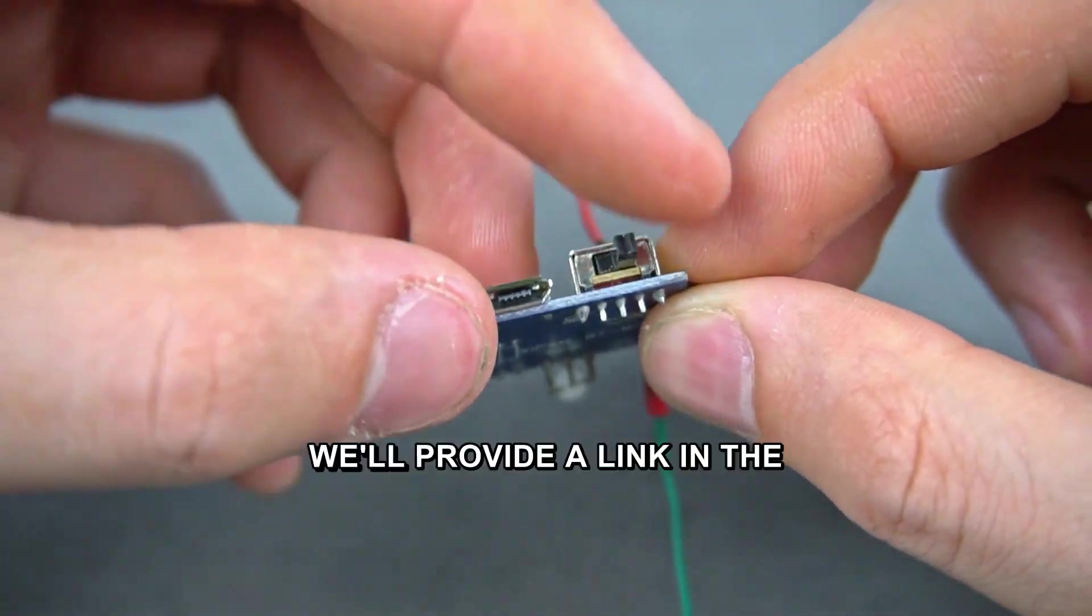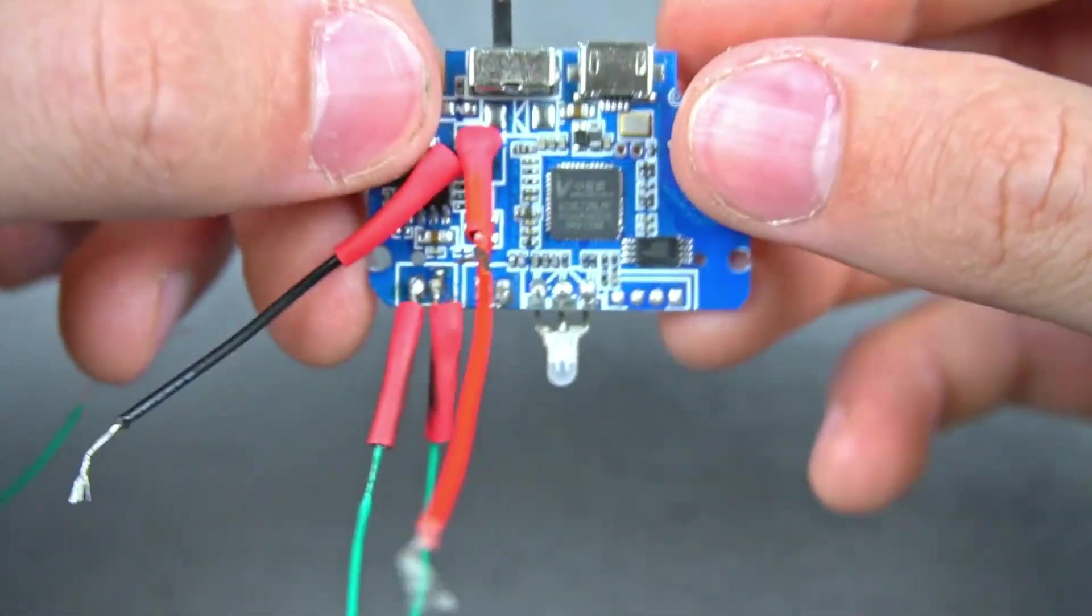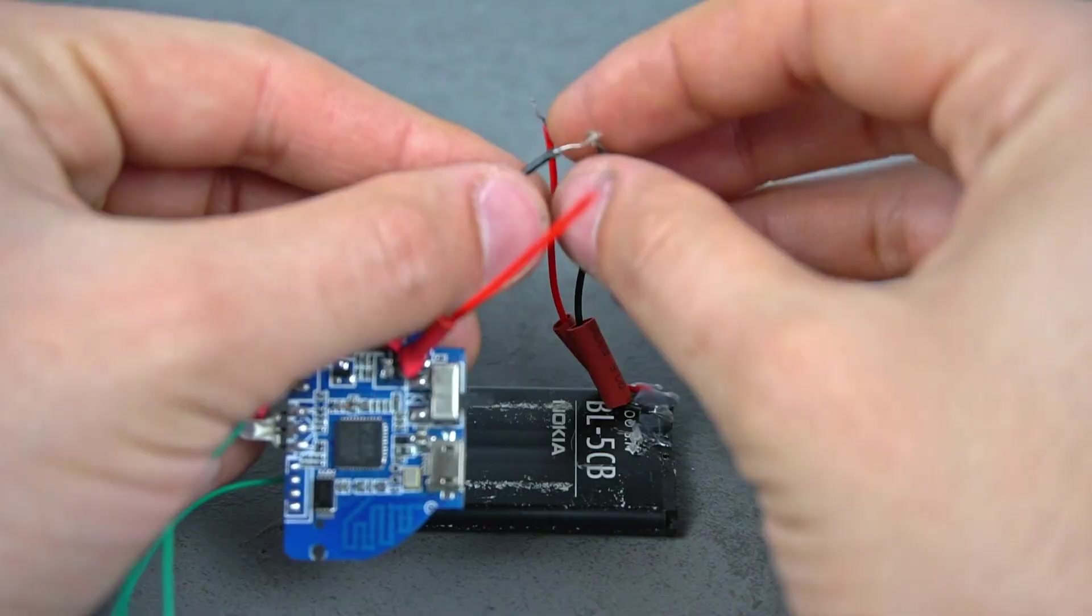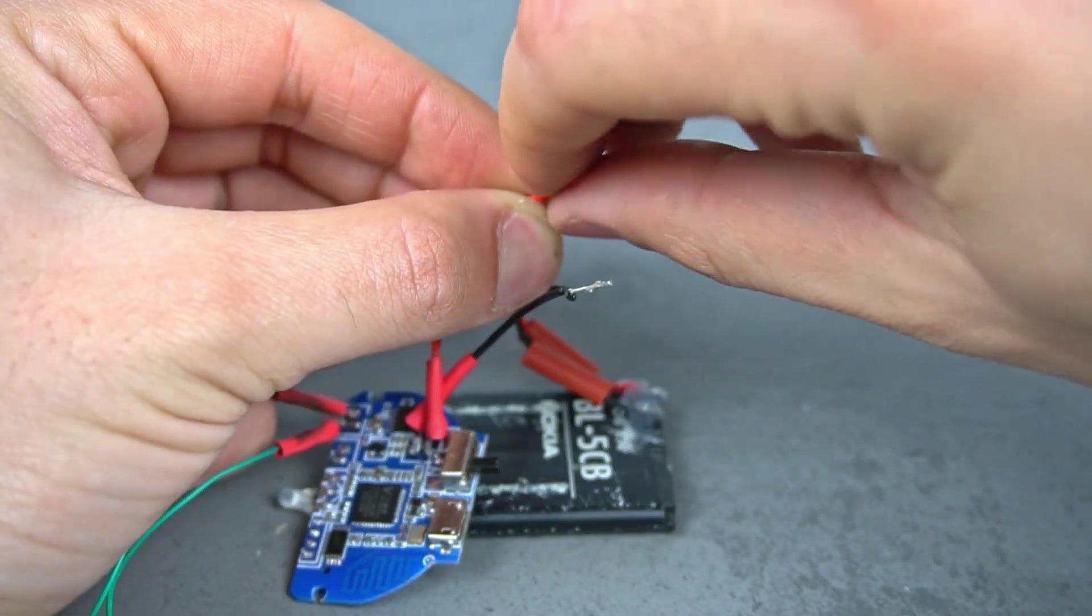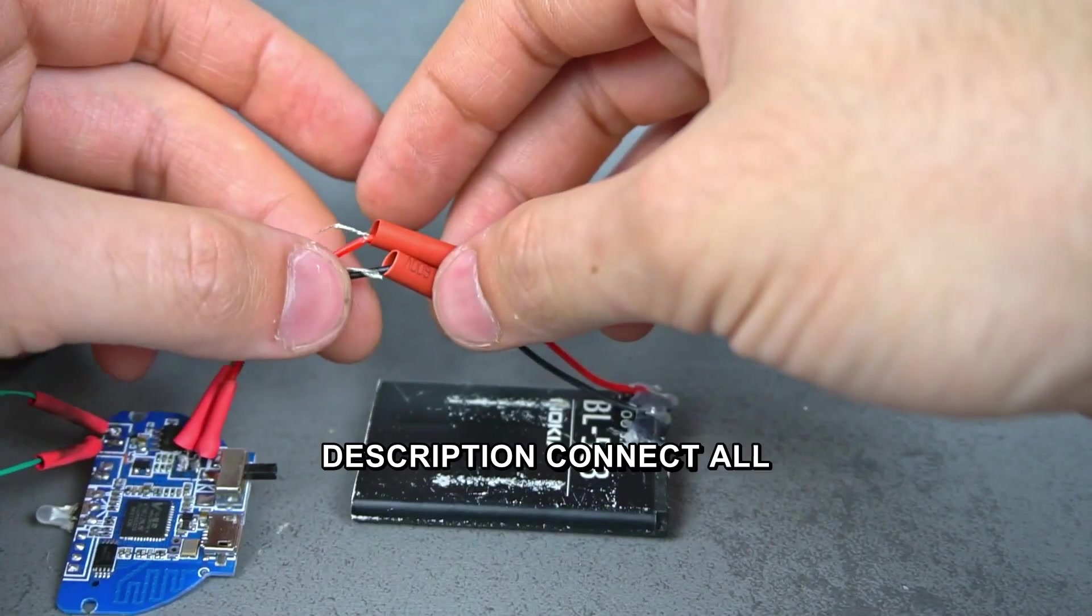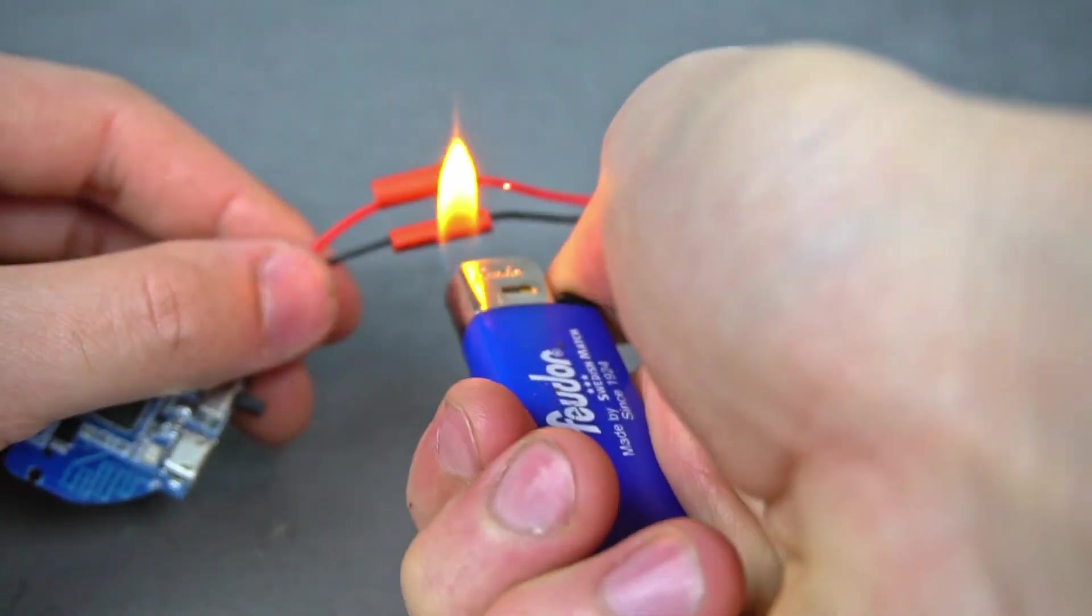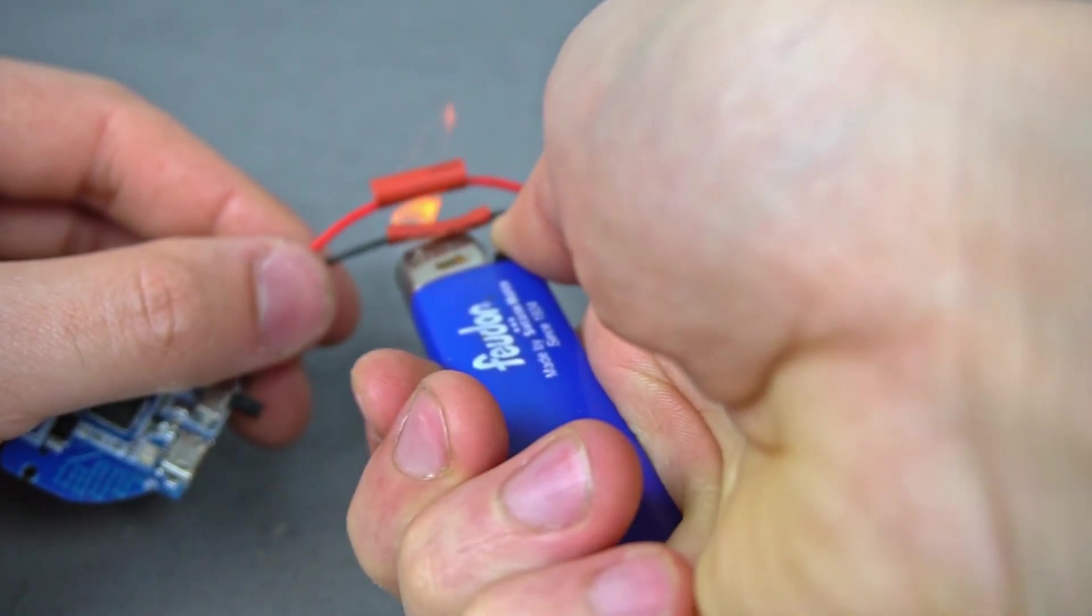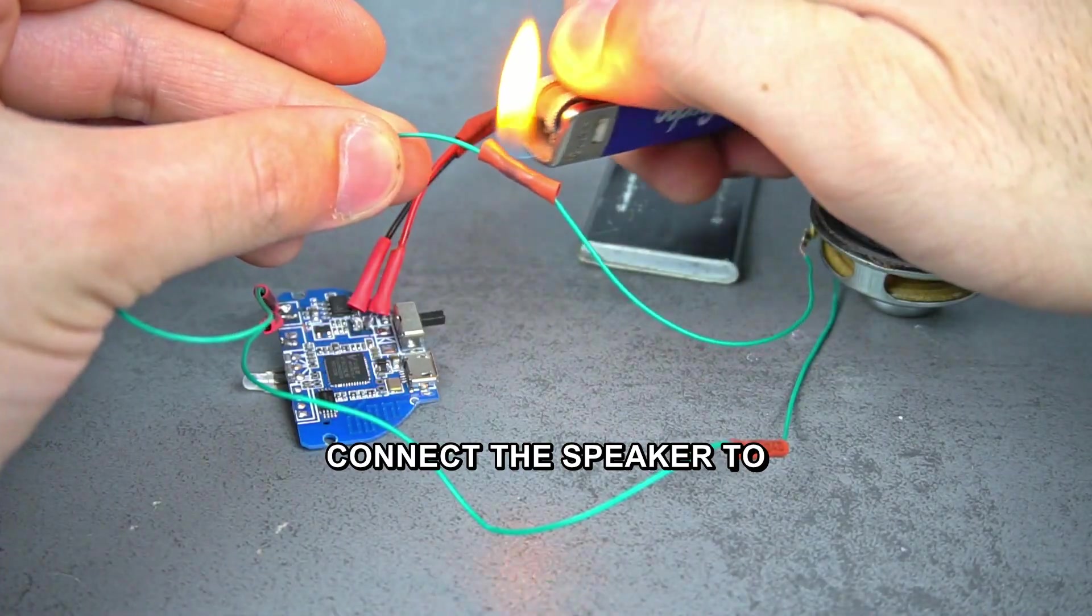If you don't know where to find it, we will provide a link in the description. Connect all the wires. Carefully insulate the connections. Connect the speaker to the circuit.